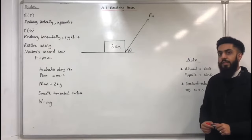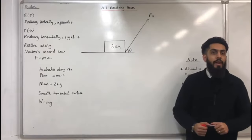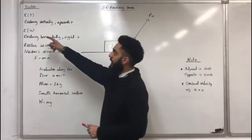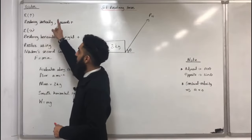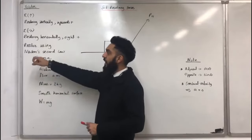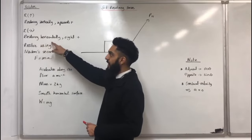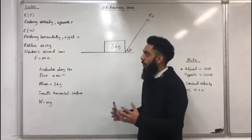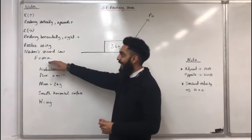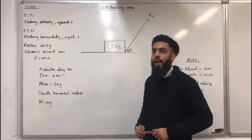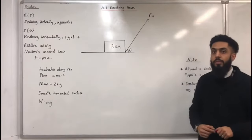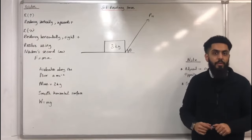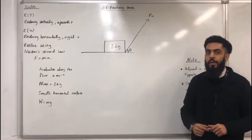Before we look at resolving forces, it is very important that we get our notation correct. This notation means resolving vertically with upwards being the positive direction. This notation means resolving horizontally with the right being the positive direction. We can resolve using Newton's second law, which states that F equals MA — F is the resultant force acting on the particle, M is the mass, and A is the acceleration.